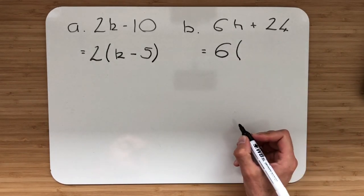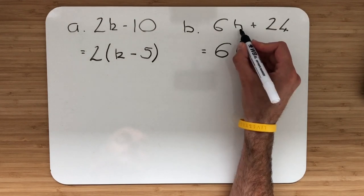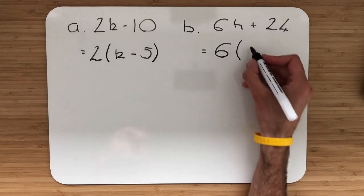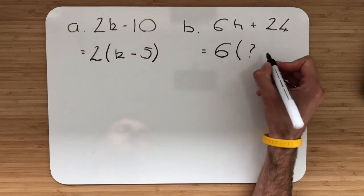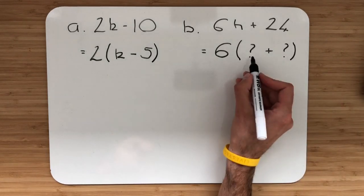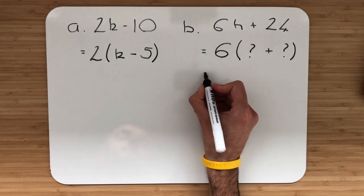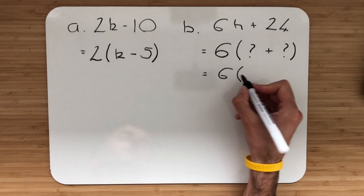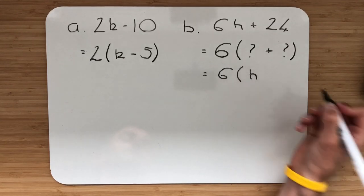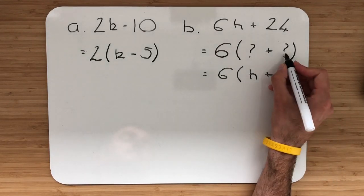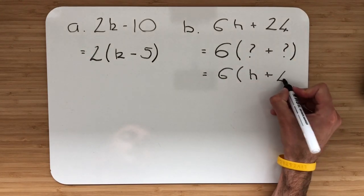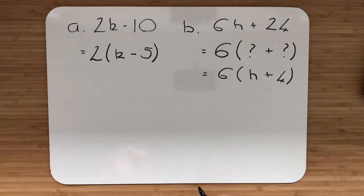Bring back your bracket. So 6 multiplied by what gives me 6h, and 6 multiplied by what gives you 24? If you're struggling, we could write question mark and question mark. We need to work out what these question marks are. 6 multiplied by what gives 6h? h. Then I put my add. 6 multiplied by what gives 24? That would be 4. And I close the bracket.